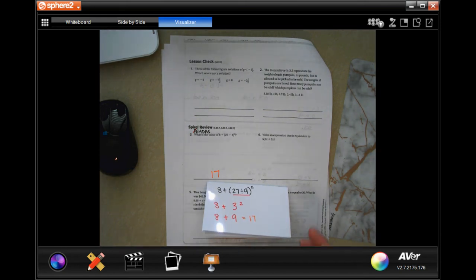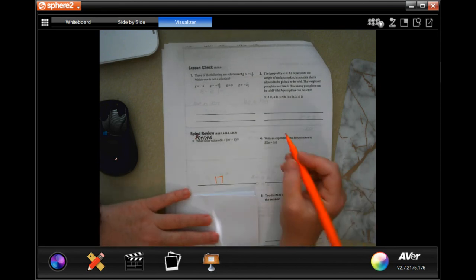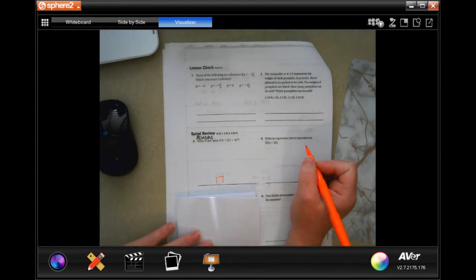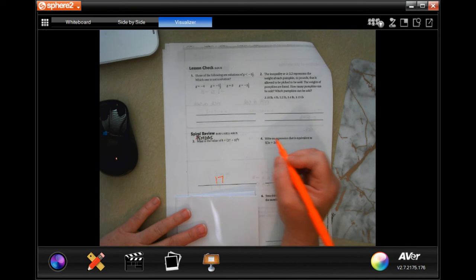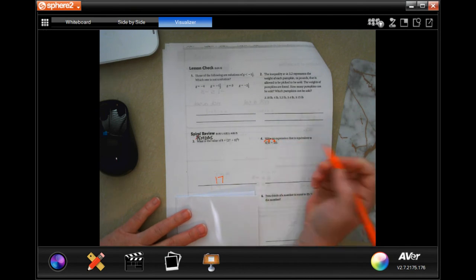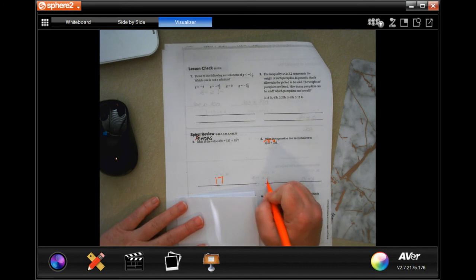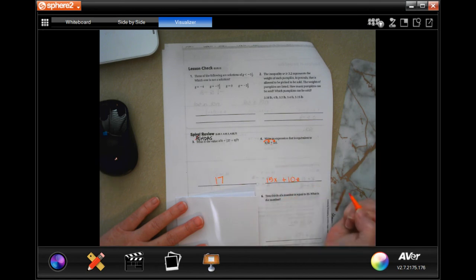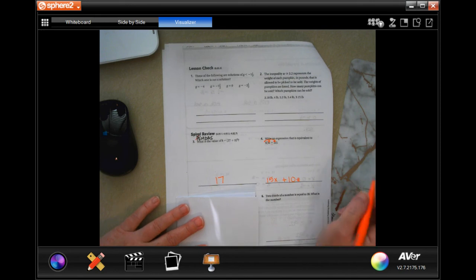Write your work down, guys. Write an expression the equivalent is equal to, well, if I take that 5 and I distribute it onto those, then I will get 15x plus, because I keep that plus sign, 10z. Not so bad.